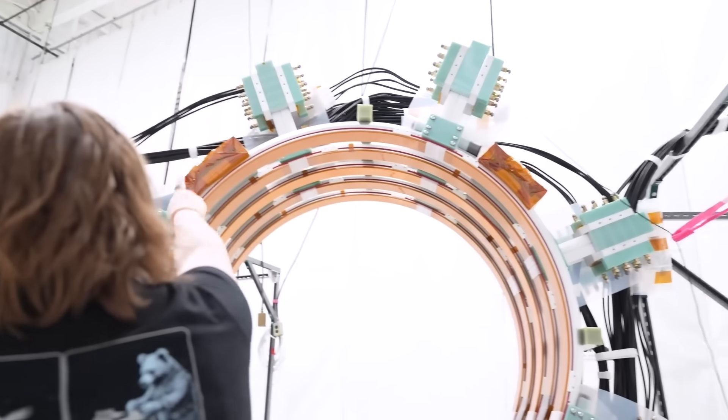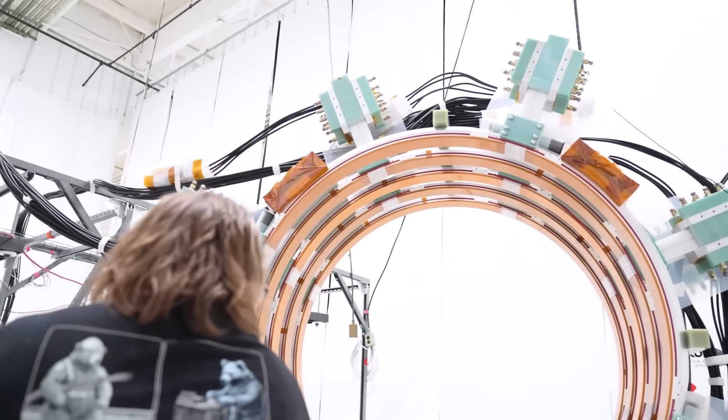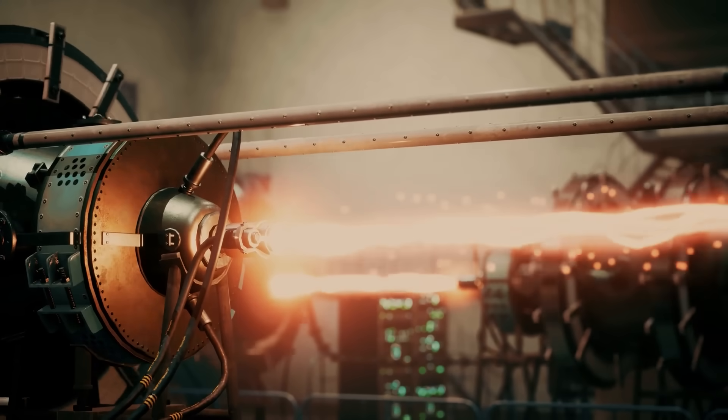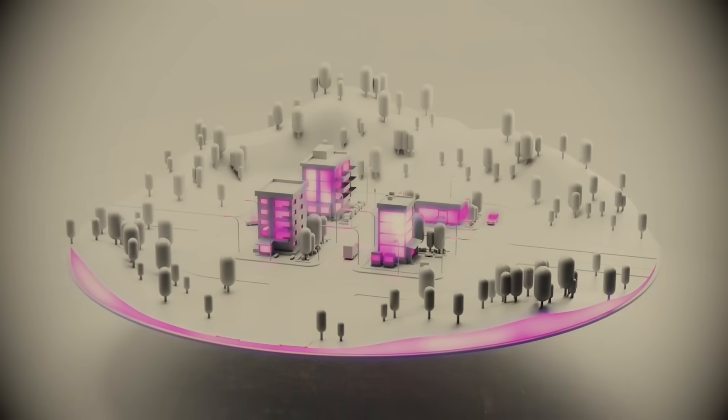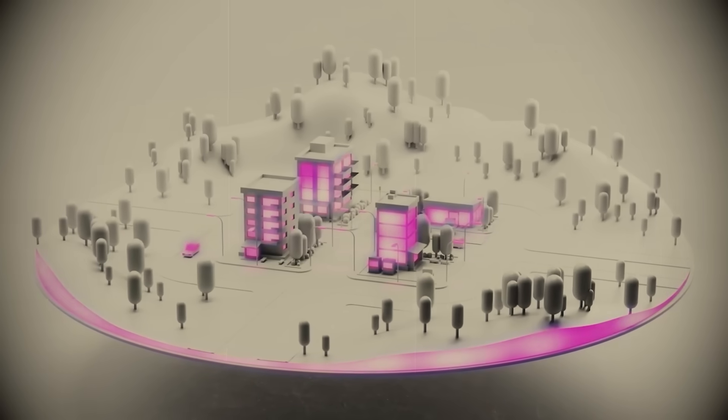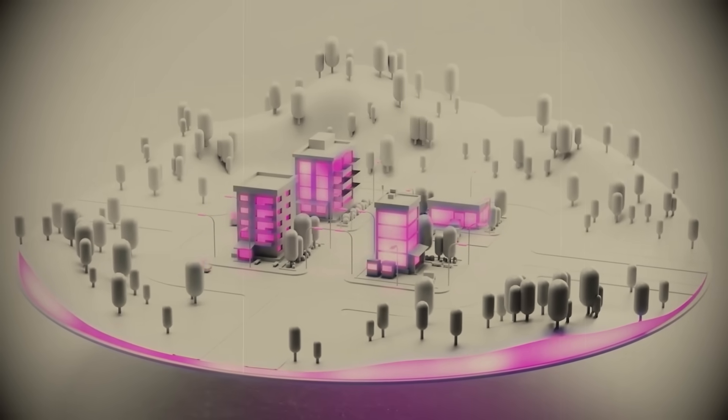Despite these doubts, Helion keeps moving forward. Its engineers are building newer machines, each supposedly closer to achieving net energy gain. The company has announced plans for a full-scale prototype capable of producing commercial electricity within the next few years.